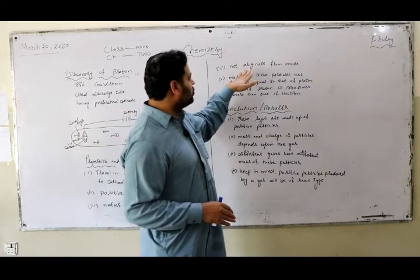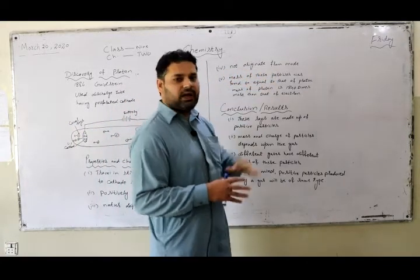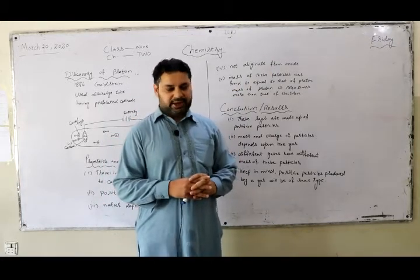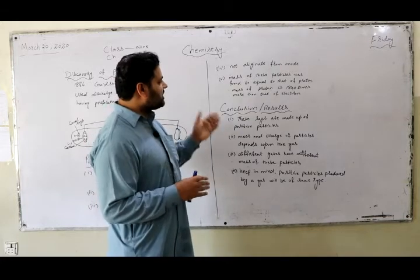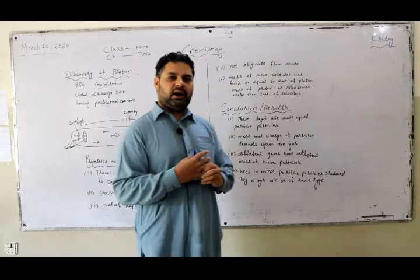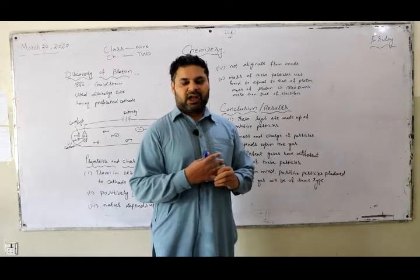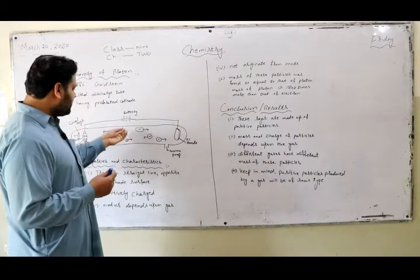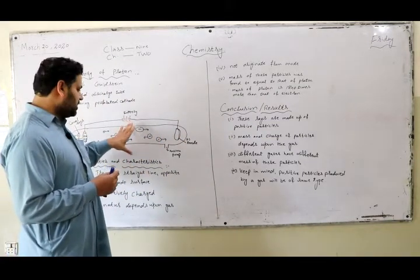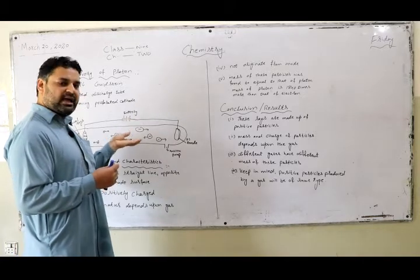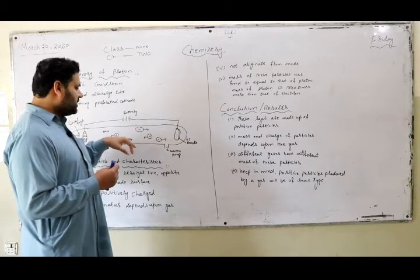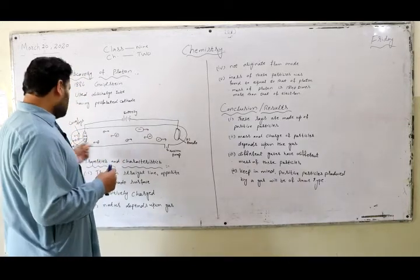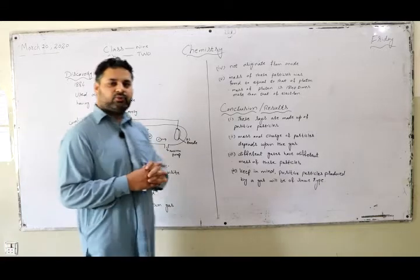Number four: these rays are not originated from the anode. Actually, the question arises: how are these rays originated? The answer is that when the electrons present in the discharge tube, which we call the cathode rays, collide with the residual gas molecules, they ionize the gas molecules and the canal rays are produced.